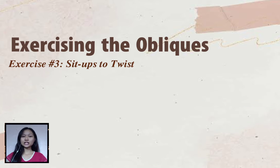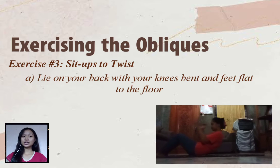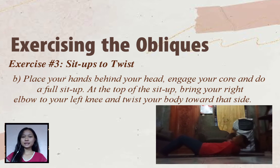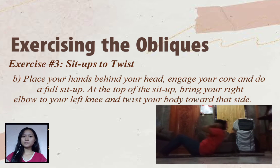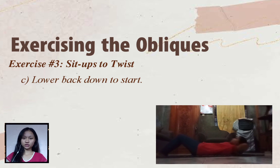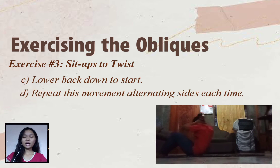The last exercise is called sit ups to twist. Lie on your back with your knees bent and feet flat on the floor. Place your hands behind your head. Engage your core and do a full sit up. At the top of the sit up, bring your right elbow to your left knee and twist your body toward that side. Then lower back down to start, and repeat this movement alternating sides each time.